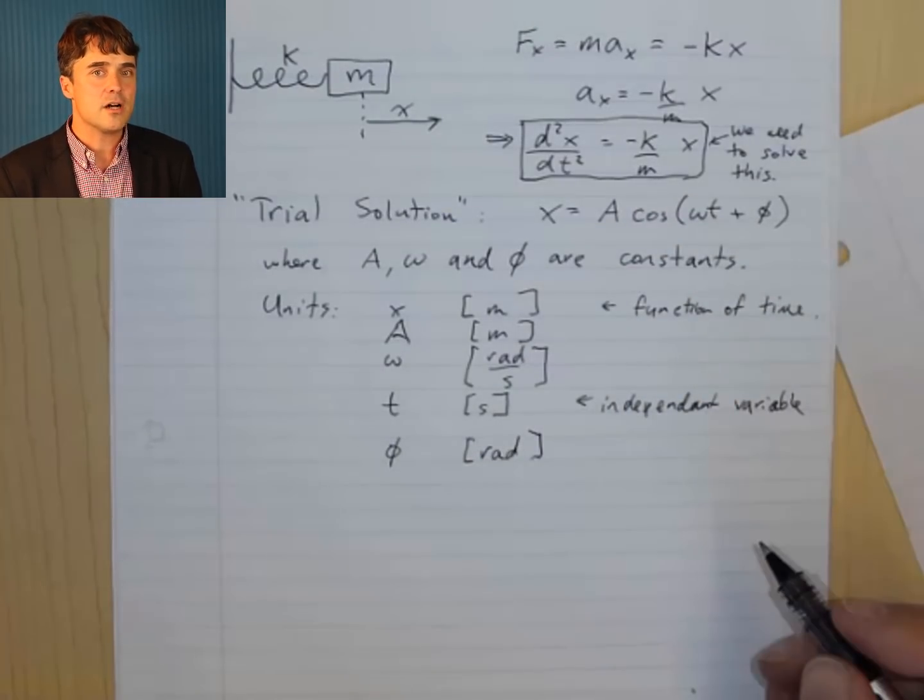So, we have these three constants in the trial solution. For now, we don't know quite what they are physically, but we'll come back to that later.